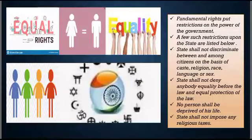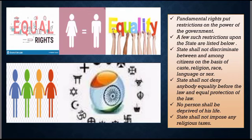Reviewing the background from previous chapters: fundamental rights put restrictions on the power of the government. Whatever rights are mentioned in the constitution must be followed by the government — no changes can be made in such rights. A few such restrictions upon the state are listed below. The state cannot discriminate among citizens on the basis of caste, religion, gender, language, and so on.